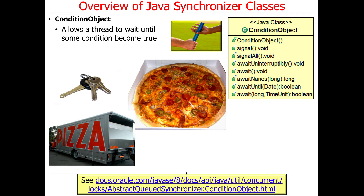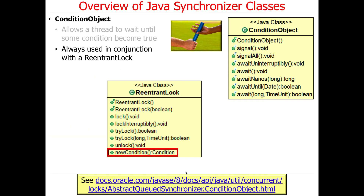Something else we'll talk about is a condition object, which is a way to let a thread wait until some condition becomes true. I'll give you a fun example about delivering pizza that will illustrate how a condition object works. You always use condition objects in conjunction with ReentrantLocks — the ReentrantLock class has a factory method that returns a condition object, and they always work together.